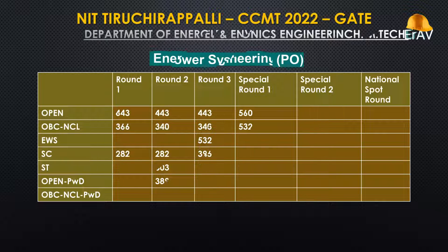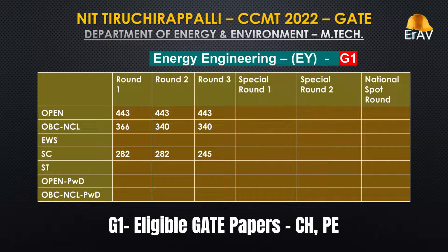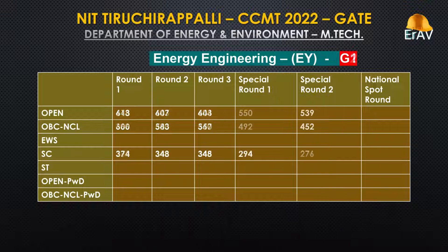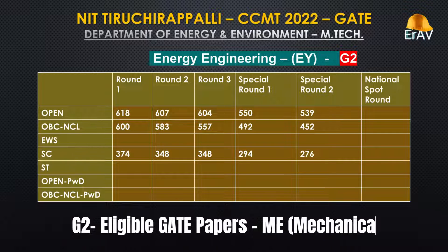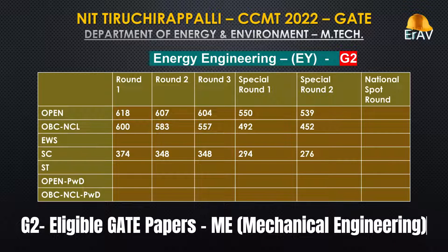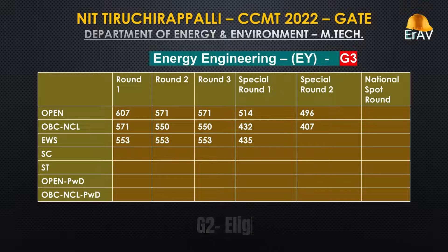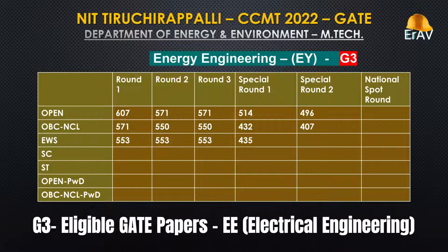Energy Engineering — Group 1: Eligible GATE Papers: Chemical Engineering (CH), Petroleum Engineering (PE). Group 2: Eligible GATE Papers: Mechanical Engineering (ME). Group 3: Eligible GATE Papers: Electrical Engineering (EE).